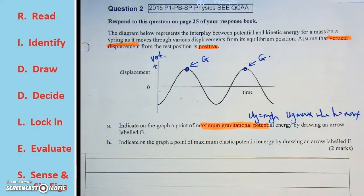Indicate on the graph a point of maximum elastic potential energy by drawing an arrow and labeling it E.